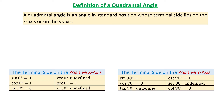Let's see an example of a quadrantal angle whose terminal side lies on the positive x-axis. Here we have the rectangular coordinate system and we will draw the initial side. An angle in standard position has the vertex at the origin and the initial side on the positive x-axis. We also want the terminal side to be on the positive x-axis. The measure of such an angle could be 0°, 360°, 720°, or negative 360°, negative 720°, and so on. Let the terminal side have a point with coordinates (x, y); then the distance from the origin to this point is r.